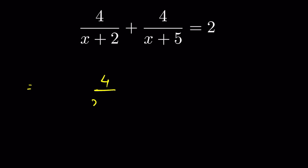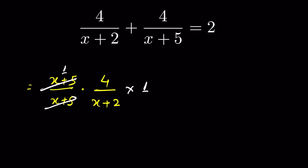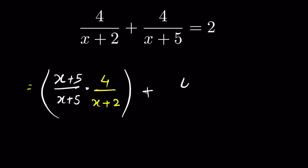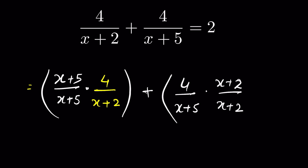For each fraction, for example 4 upon (x+2), if we multiply and divide it by (x+5), multiplying and dividing by the same number is just like multiplying by 1, because they cancel and equal 1. Multiplying any number by 1 does not change it, so we are not changing the fraction. Therefore multiplying and dividing by the same number gives an equivalent fraction. We multiply and divide the first fraction by (x+5) and the second fraction by (x+2).